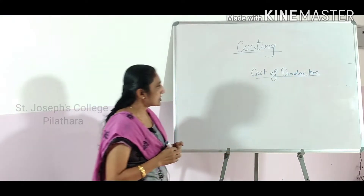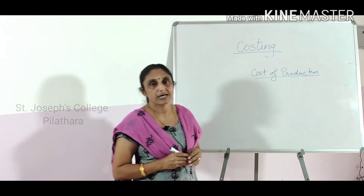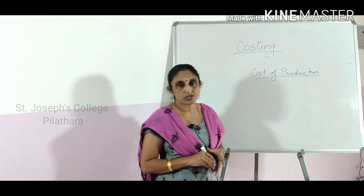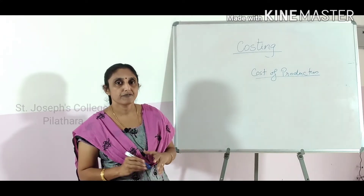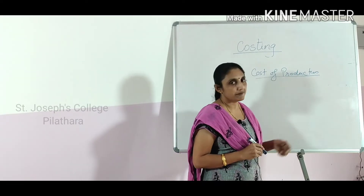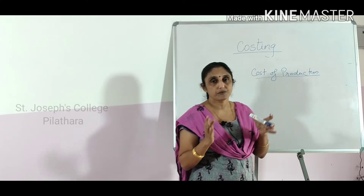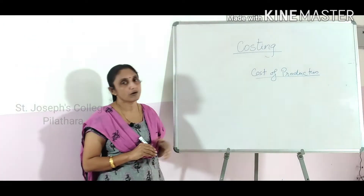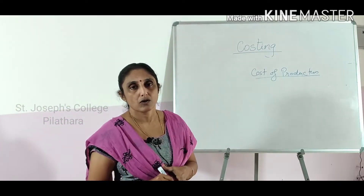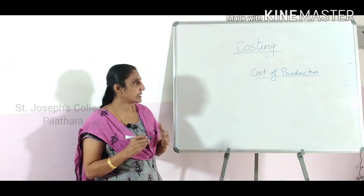So why do we need this cost? In simple terms, this cost is needed to fix the selling price of a product. Only after knowing the cost of a product can we add our profit to that cost and then arrive at the selling price. But apart from this, the main objective of introducing cost accounting in a production organization is to control cost, and through controlling cost, we can reduce the cost of production.